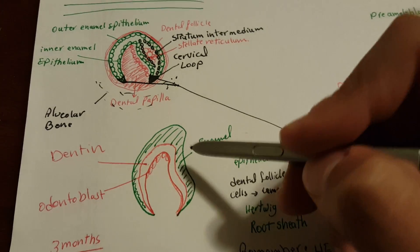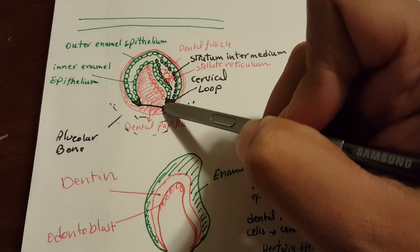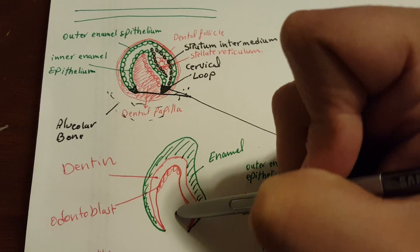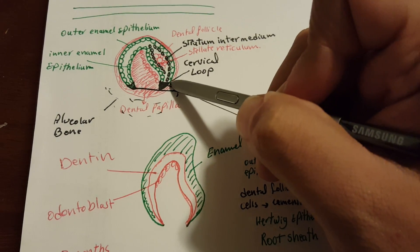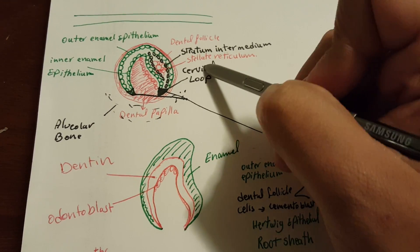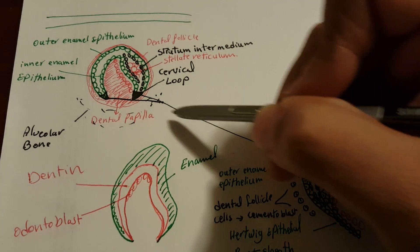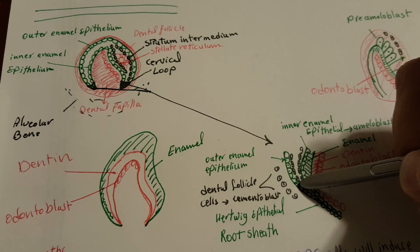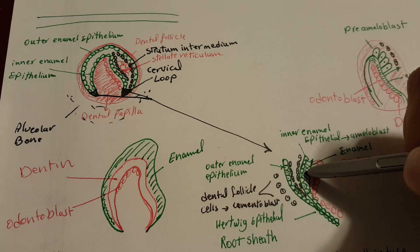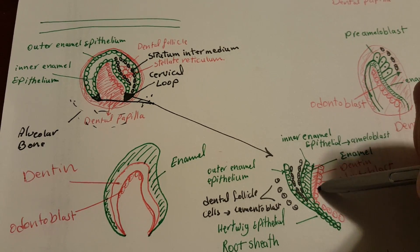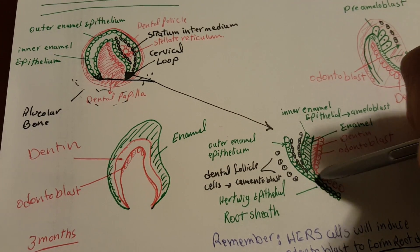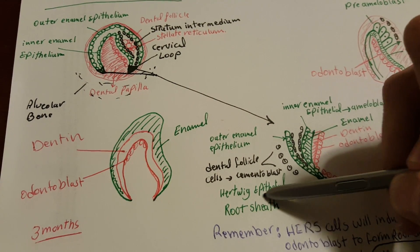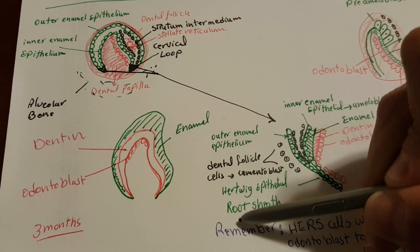Remember we said we'd go back to the cervical loop. We already have the formed crown enamel and dentine — now let's see how the root is formed with the help of the cervical loop. The cervical loop is where the inner enamel epithelium and the outer enamel epithelium meet. These inner and outer epithelium cells come together here to form what's called Hertwig's epithelial root sheath, or HERS.